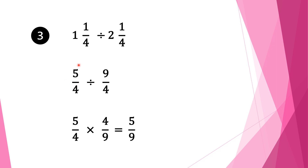Now we have a normal fraction division. We keep the first fraction 5 over 4 as it is, change the division sign into multiplication, and take the reciprocal of the second fraction. It is 9 over 4, so we write it down as 4 over 9. We check whether we can cancel anything — we can cancel 4 and 4. So 4 goes into 4 once. We multiply our numerators: 1 times 5 is 5, and 9 times 1 is 9. So the final solution is 5 over 9.